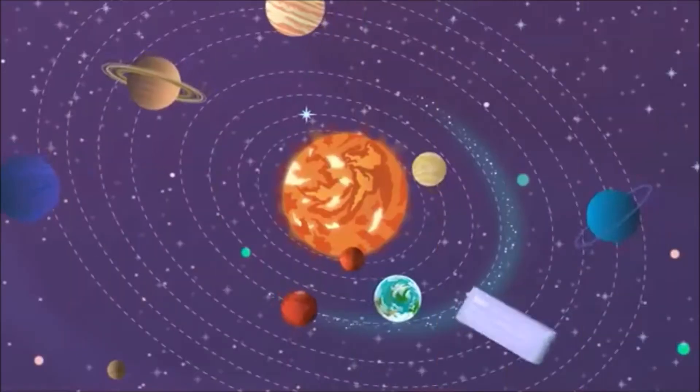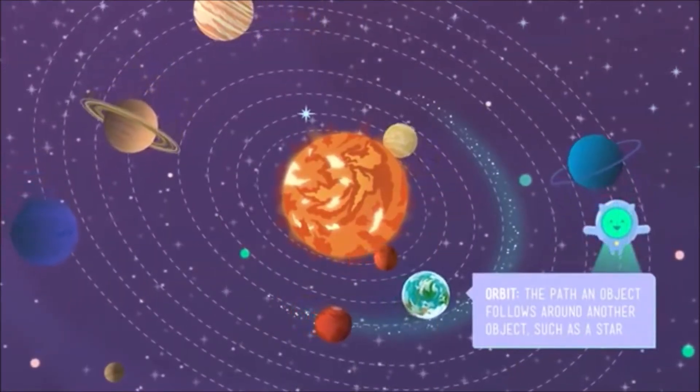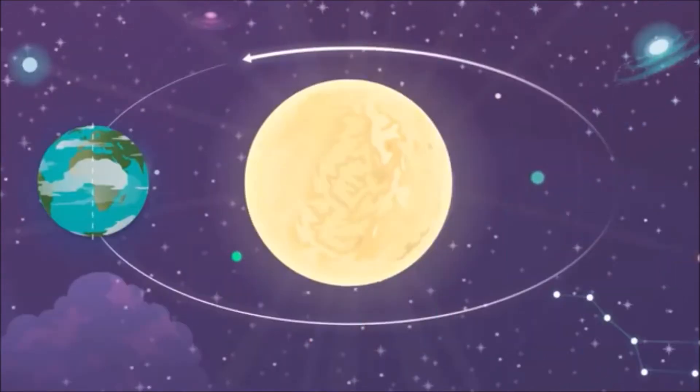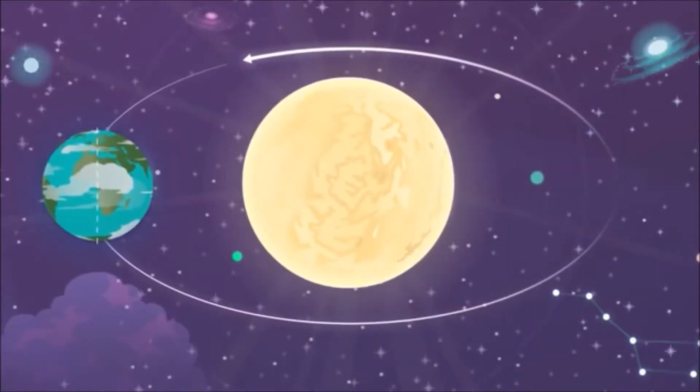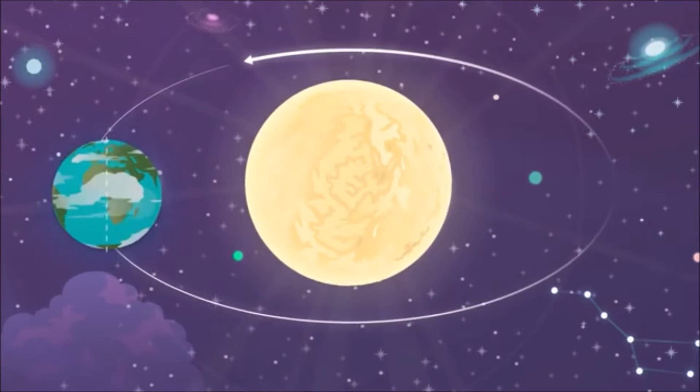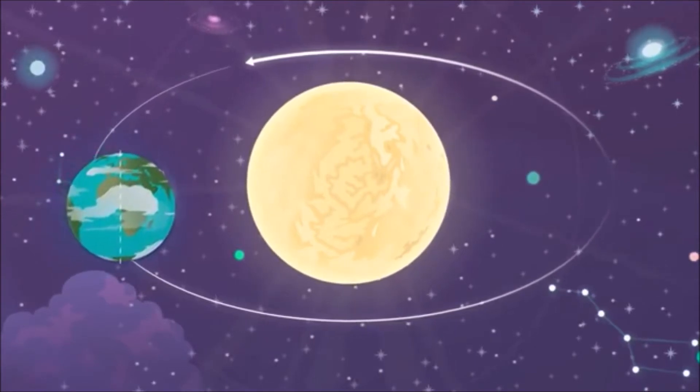You already know that the sun is pretty important. It is the center of the solar system, after all. You also know that our planet, Earth, revolves around the sun, making its orbit once every 365 days.